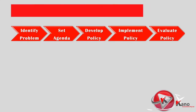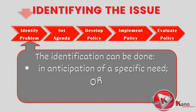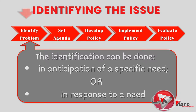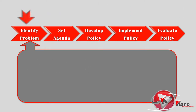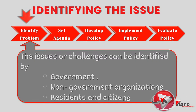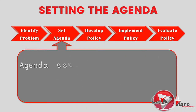The process starts with identifying and defining what the issue to be addressed is. This identification can be done in anticipation of a specific issue — for example, where the government anticipates increased immigration into the country. The identification of the issue can also be done in response to a specific need or issue — for example, where an increase in crime is being noticed. The issues or challenges can be identified by government or other stakeholders such as non-government organizations or residents and citizens.